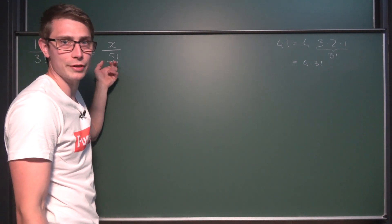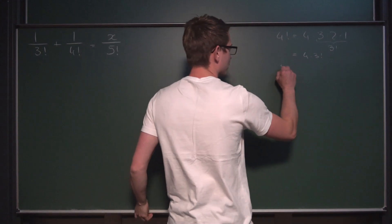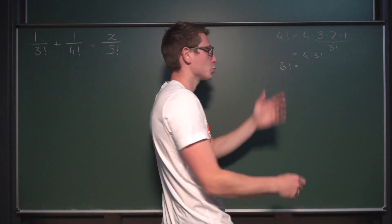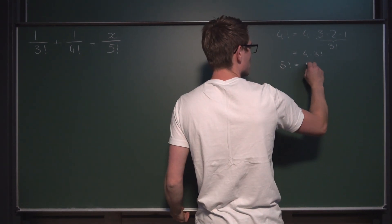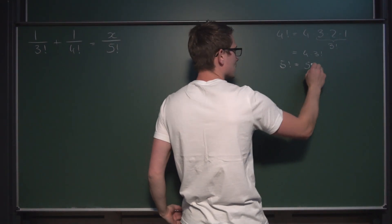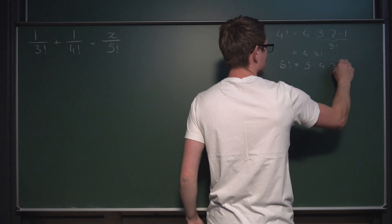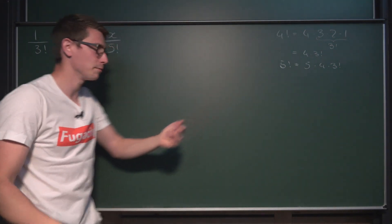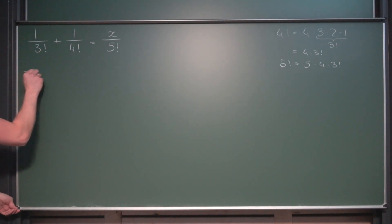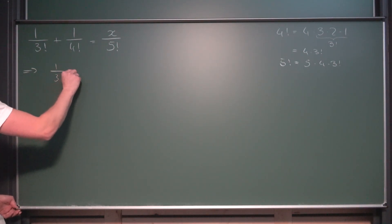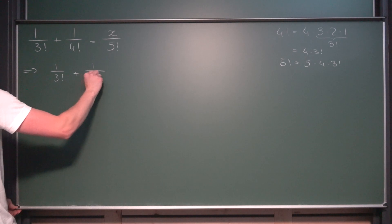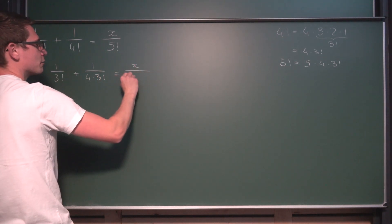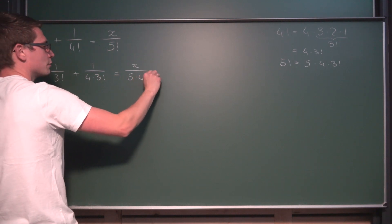The same thing goes for 5 factorial. We can rewrite 5 factorial as 5 times 4 times 3 times 2 times 1, recovering the 3 factorial in the process. So 5 factorial is the same as 5 times 4 times 3 factorial. This brings us a lot of steps ahead. We now rewrite: 1 divided by 3 factorial plus 1 divided by 4 times 3 factorial is equal to x divided by 5 times 4 times 3 factorial.